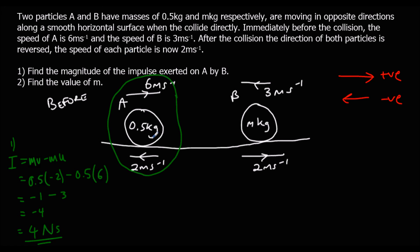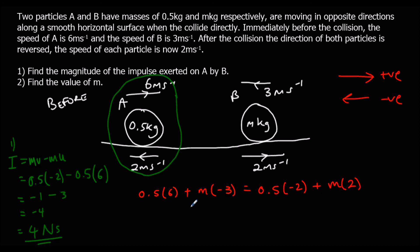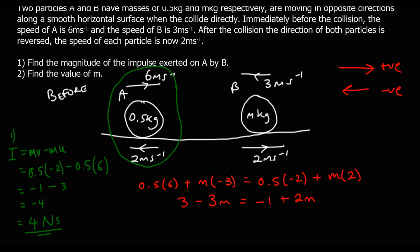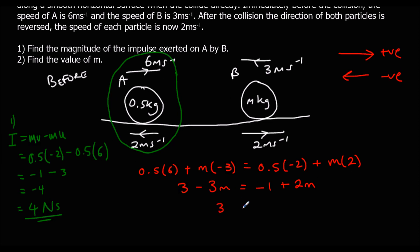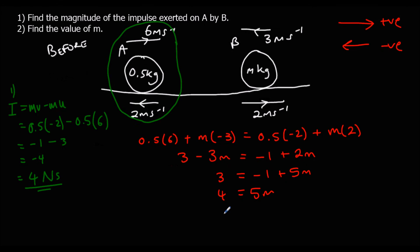Find the value of M. Using the conservation of momentum formula: M1U1 is 0.5 times 6, plus M2U2 which is M times negative 3, equals M1V1 which is 0.5 times negative 2, plus M2V2 which is M times 2. This gives 3 minus 3M equals negative 1 plus 2M. Adding 3M to both sides: 3 equals negative 1 plus 5M. Adding 1 to both sides: 4 equals 5M. Dividing both sides by 5 gives M equals 4/5, or 0.8 kilograms.